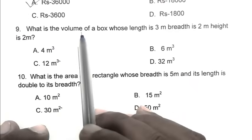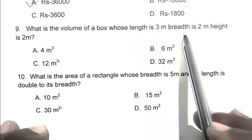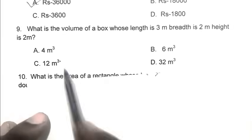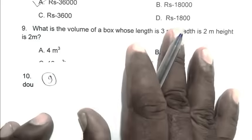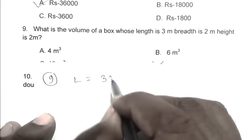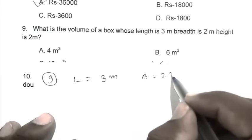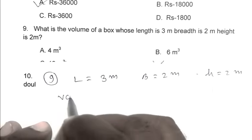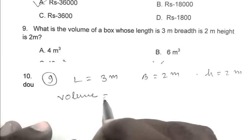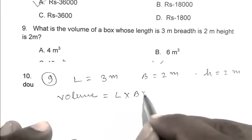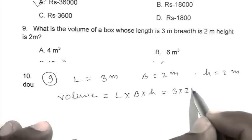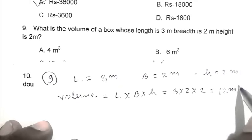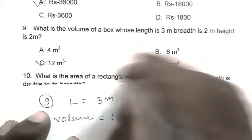Question number nine: what is the volume of a box whose length is 3 meter, breadth 2 meter, height is 2 meter? Volume equals length multiplied by breadth multiplied by height, so 3 multiplied by 2 multiplied by 2 equals 12 meter cube. So C is the right answer.